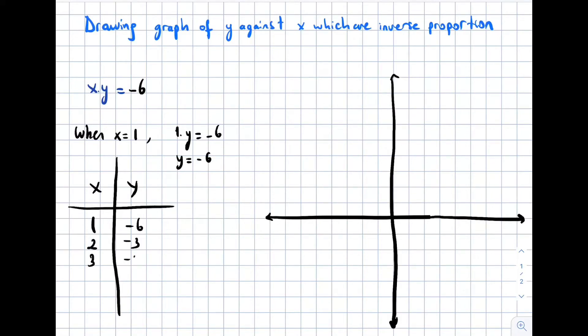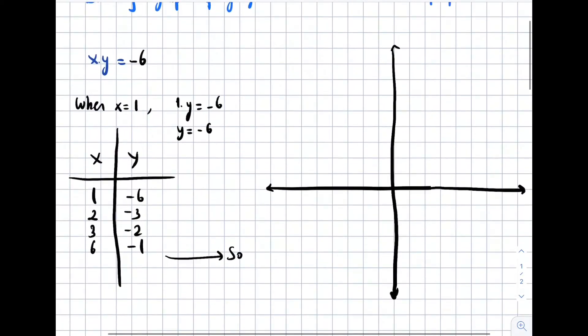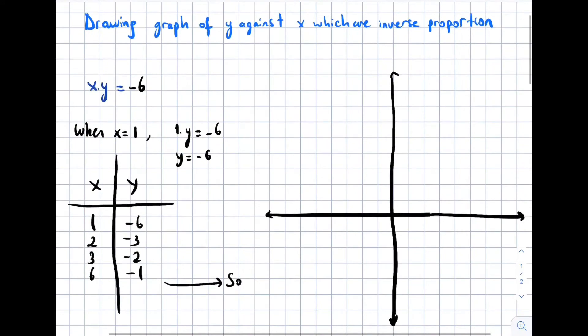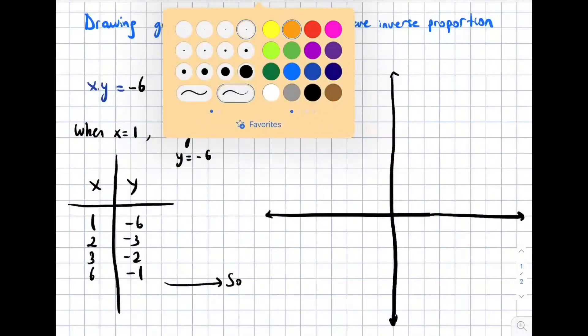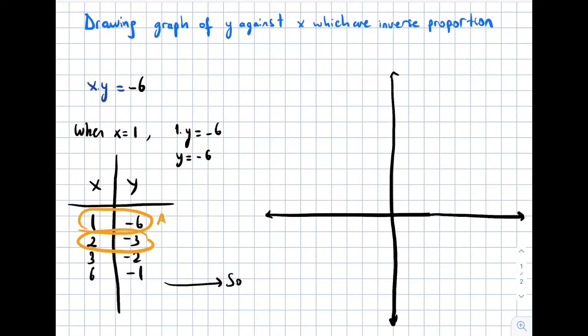When x is 3, y is negative 2 because 3 times negative 2 is negative 6. When x is 6, y is negative 1. We just replace those values with x and we are finding y, then we are going to have at the end some points.